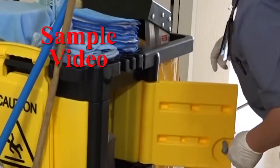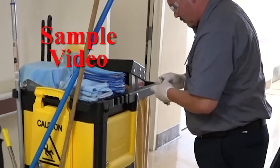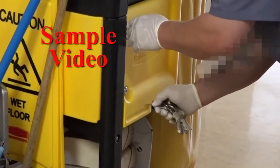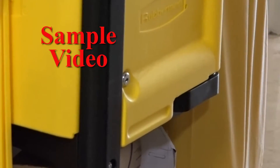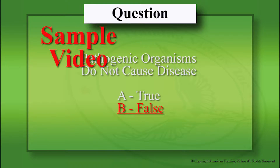Currently, some EPA-registered disinfectants have contact times of 1 to 3 minutes. By law, users must follow all applicable label directions for EPA-registered products. Question: Pathogenic organisms do not cause disease — true or false? If you answered B, false, you are correct. Pathogenic organisms are germs that are harmful to the human body.